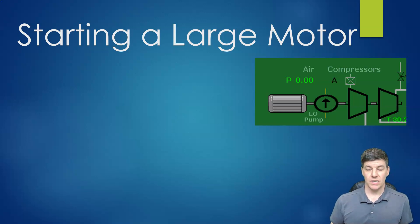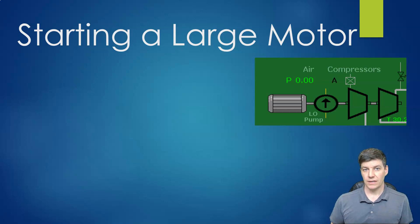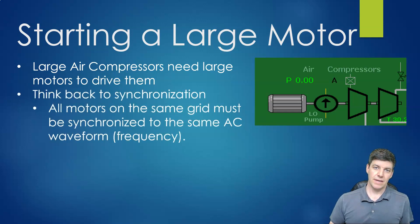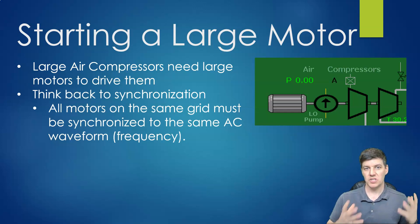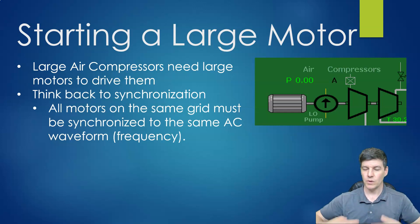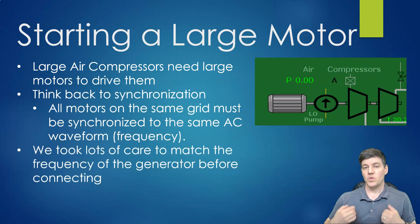The last thing we want to look at is starting a large motor — air compressors are good examples with a fairly large energy draw. They have a large motor to drive them. Thinking back to our ideas of synchronization: when we synchronized a generator to a grid, we were matching that generator's rotational speed to the grid, which is composed of all kinds of generators, motors, and other electrical components all spinning in sync at the same speed or some multiple of the frequency — all connected to each other.